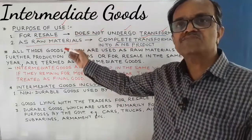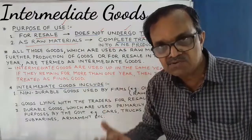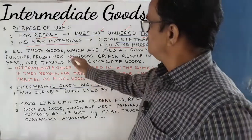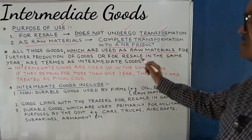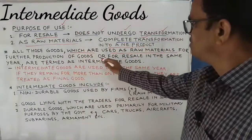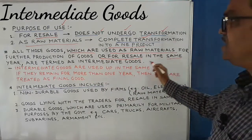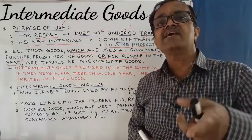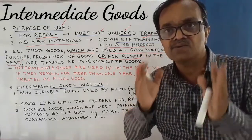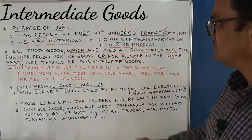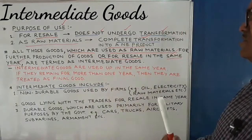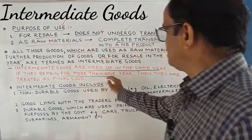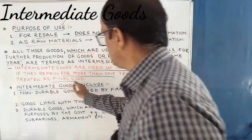On the basis of purpose of use, how can we define intermediate goods? All those goods which are used as raw materials for further production of goods and services, or for resale in the same year — that is the main point. If used for resale, then it should be sold in the same year in which it was manufactured. Intermediate goods are used within the same year. If they remain for more than one year, then they are termed as final goods, not intermediate goods.